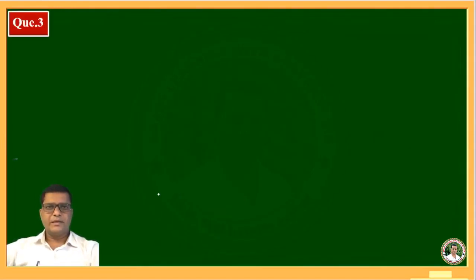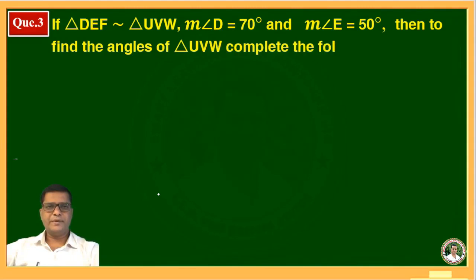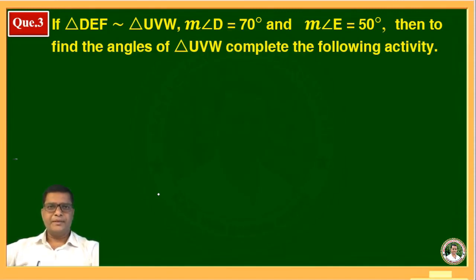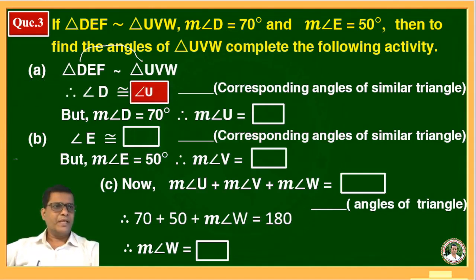The third question: if triangle DEF is similar to triangle UVW, angle D equals 70 degrees and angle E equals 50 degrees, then find the angles of triangle UVW by completing the activity. Since triangle DEF is similar to triangle UVW, angle D is congruent to angle U. Therefore, angle U equals 70 degrees.